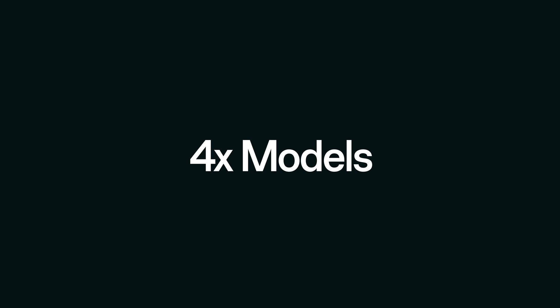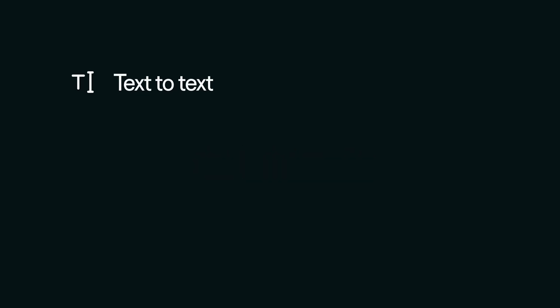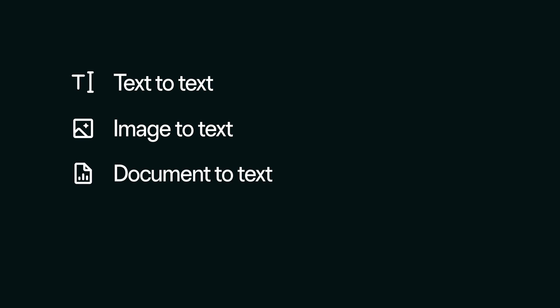The models we're going to be using in this course are: text-to-text, which is the general purpose language models we've been talking about; image-to-text, which is recognizing and labeling objects in images; document-to-text, which is where you convert documents or files into text; and audio-to-text, which is converting spoken language into text.